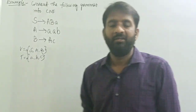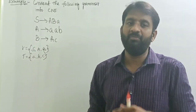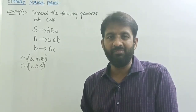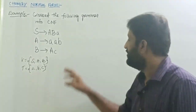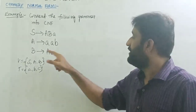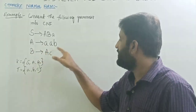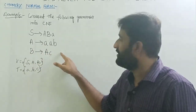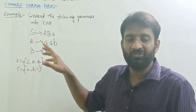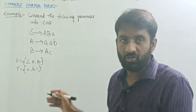In the procedure, first we need to simplify the grammar — meaning eliminate unit productions, eliminate epsilon productions, and eliminate useless variables. There are no unit productions and no epsilon productions. B derives some string, A derives some string, and both A and B are reachable from S directly, so there are no useless variables.